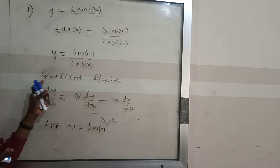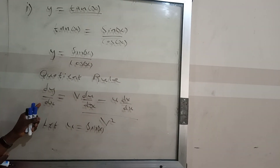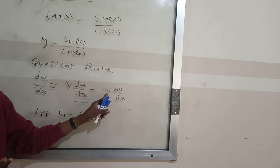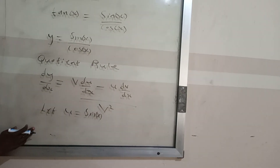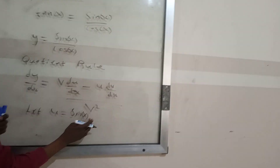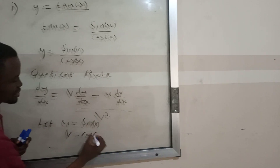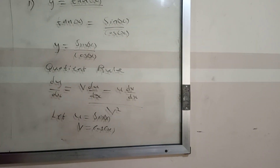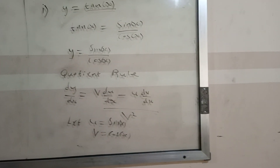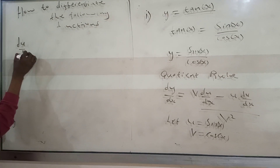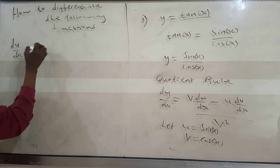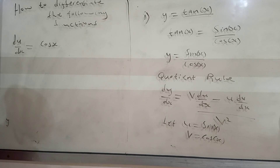Using the quotient rule, we let u equal to sine x and v equal to cos x. We then differentiate to find du/dx and dv/dx. The du/dx from the question gives us cos x, and the dv/dx is equal to negative sin x.